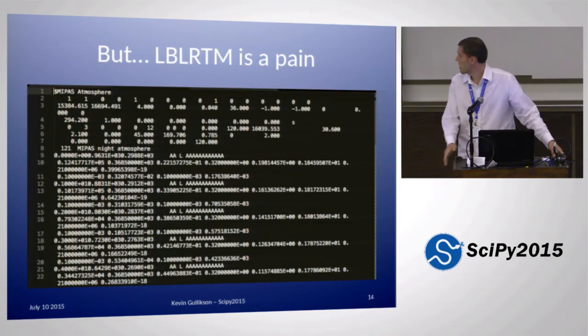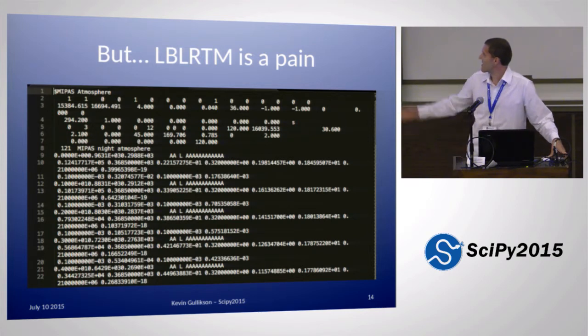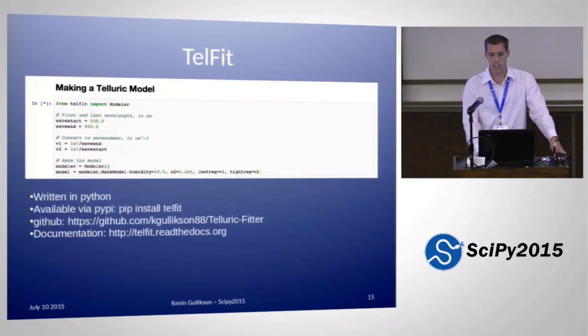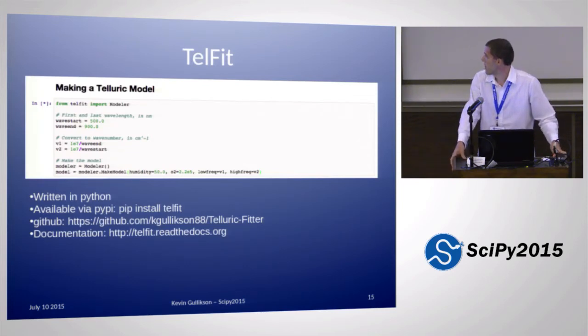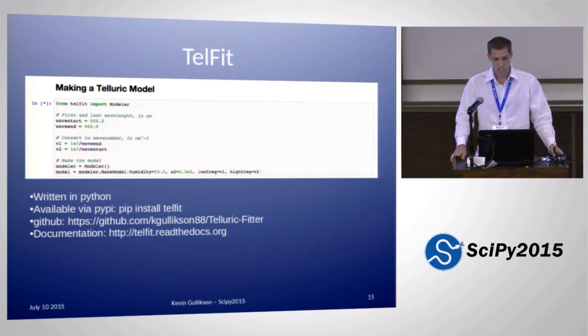The problem is LBLRTM is not easy to use. This is a parameter file for it. It's a bunch of ones and zeros and things about the starting and ending frequency. If you want to use LBLRTM directly, you have to write a parameter file like this. So what I've done is write a code called Telfit, which abstracts all that away. It lets you write a few lines of Python code to generate a telluric model and does all the hard work of interfacing with LBLRTM.